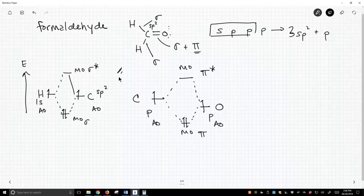This is an energy axis, and those electrons go down in energy. Therefore, this is a stable interaction. We're forming this covalent carbon-oxygen pi bond. What does this orbital look like?